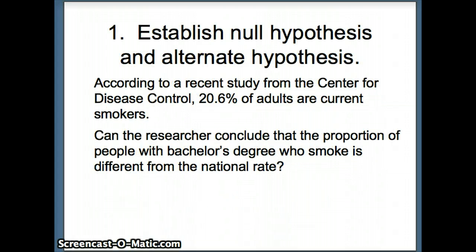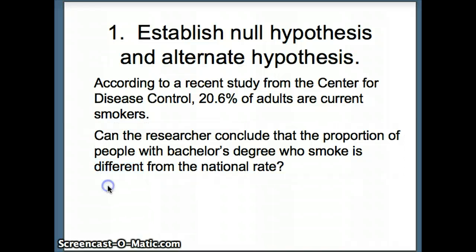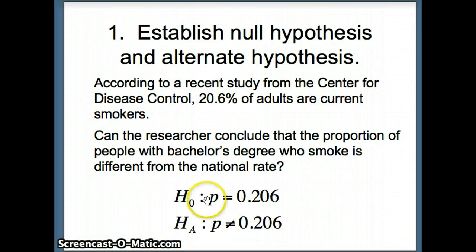We establish our hypotheses. The CDC states 20.6% smoke, and the researcher wants to determine if the proportion for bachelor's degree holders is different — the key word is 'different,' which tells us this is a two-tail test. So H₀: P = 0.206 versus Hₐ: P ≠ 0.206.